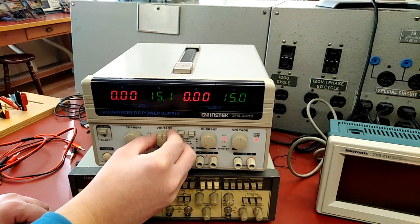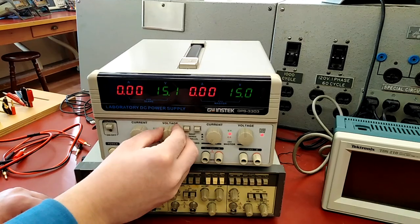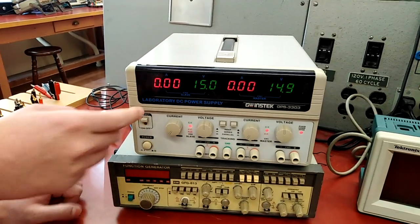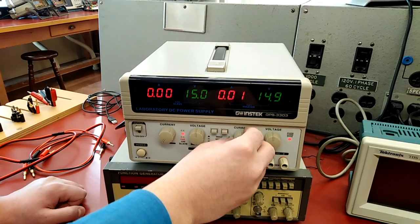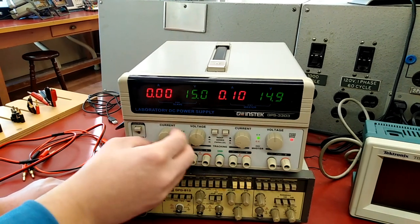And usually, I mean always, you want to set a current limit to keep your circuits safe. You can do that when it's in off mode. Typically 0.1 ampere is more than enough. So in all of the labs, you should set the current limit to around 0.1 ampere.